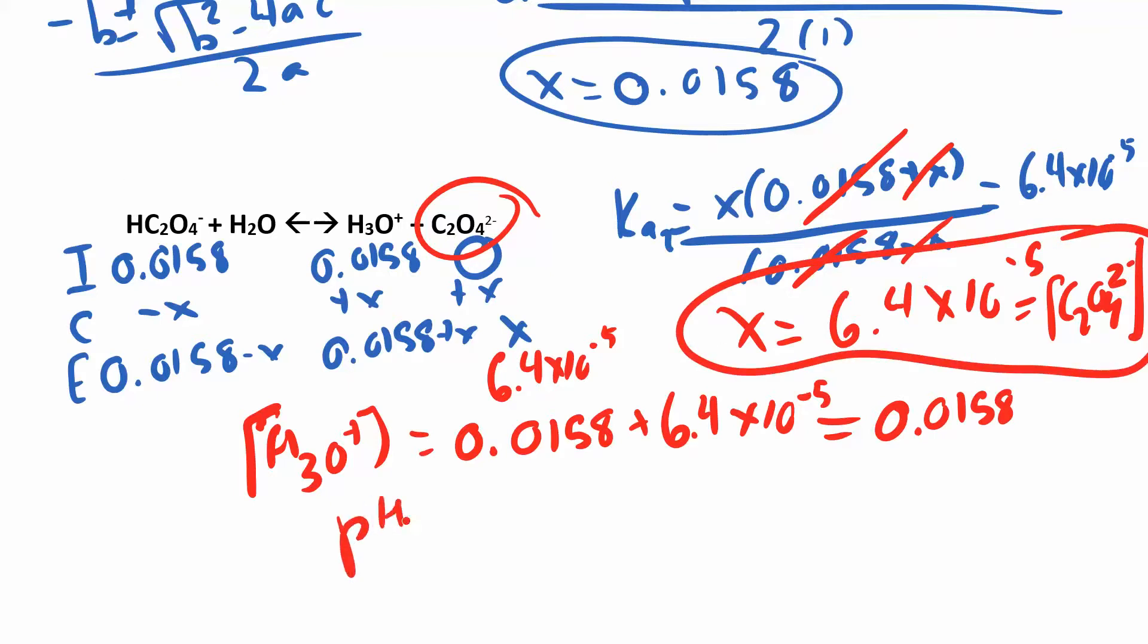But to find the pH, you have to look at the first step where you got most of your hydronium. Then you had a little bit more, but the little bit more was so little that it didn't really contribute much to the pH.